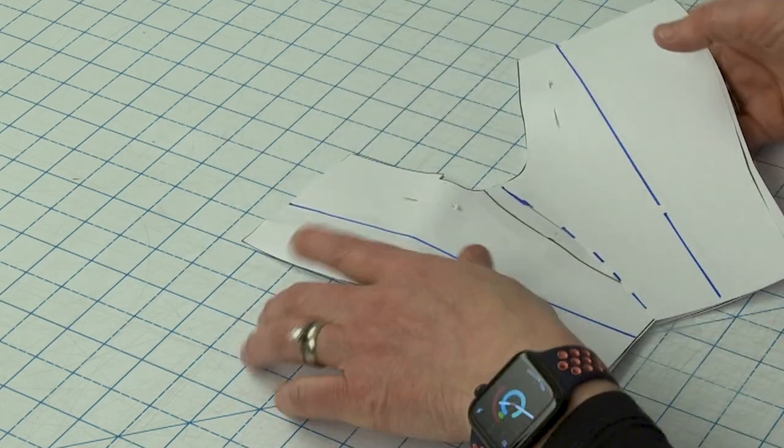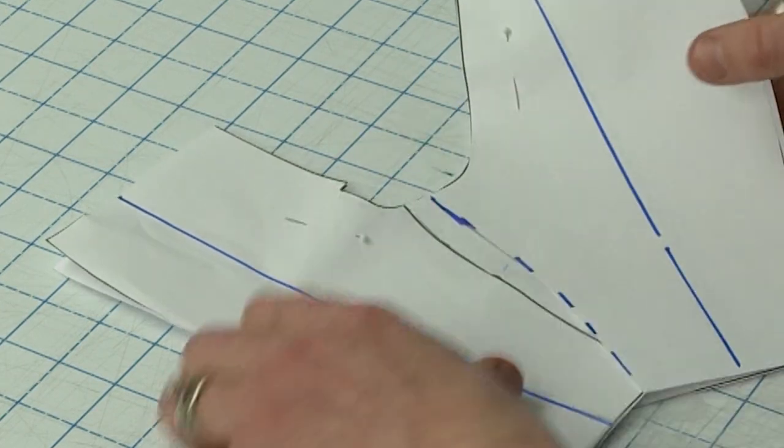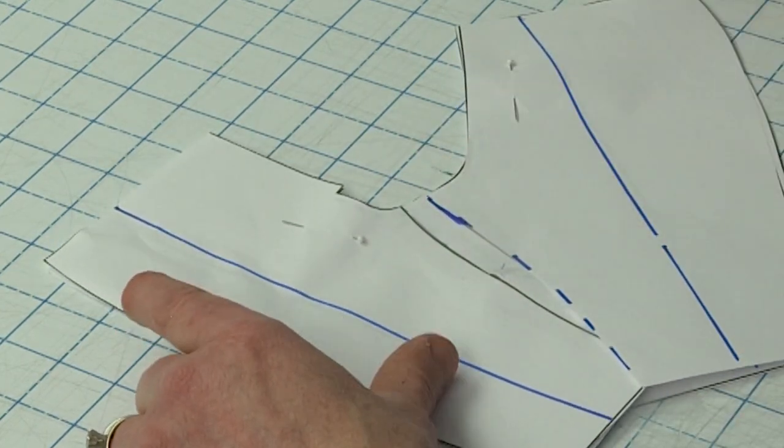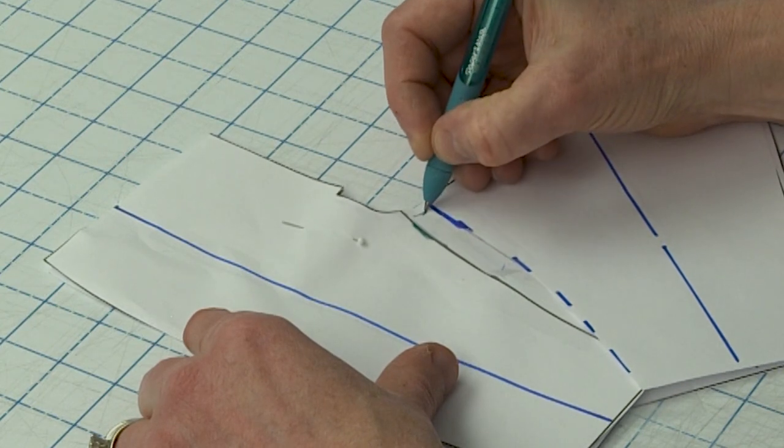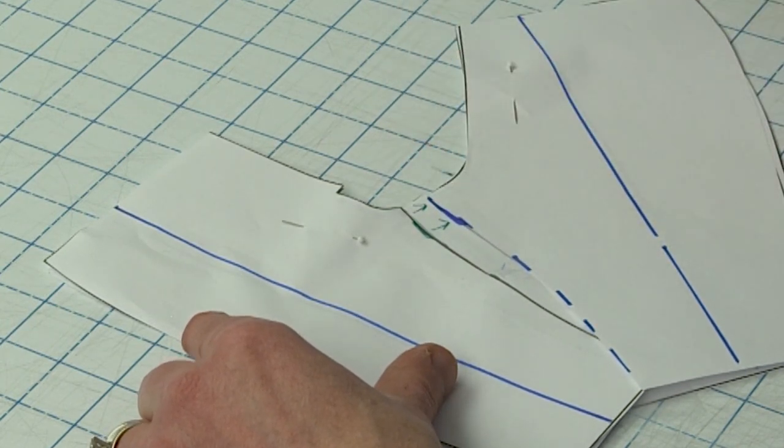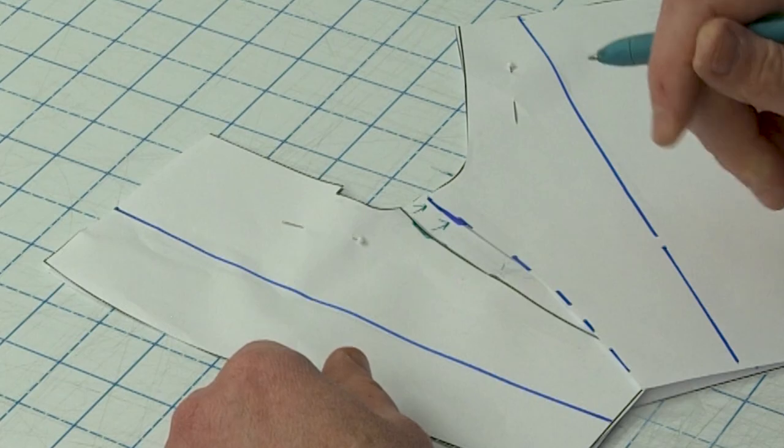So the only thing we did was move our inseam. It was here and we moved it this way a half an inch. So that's how you shift your inseam to the back if it's too far forward.